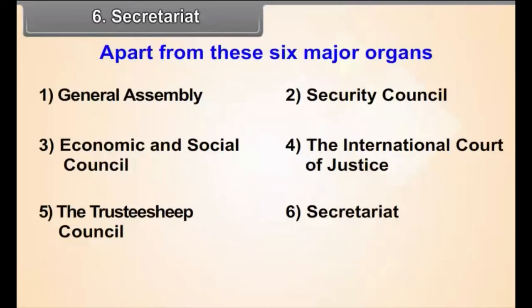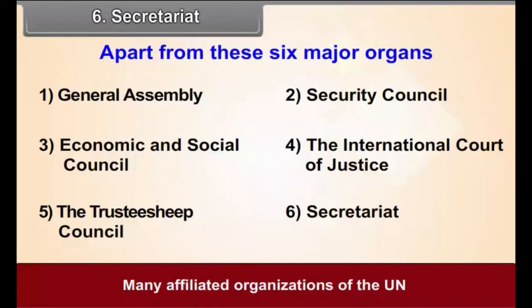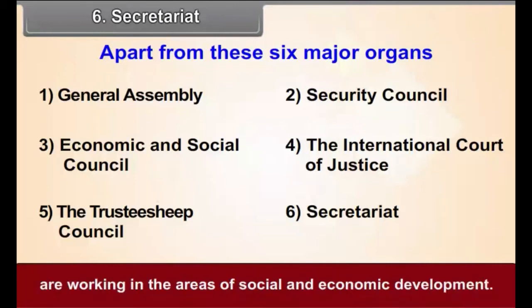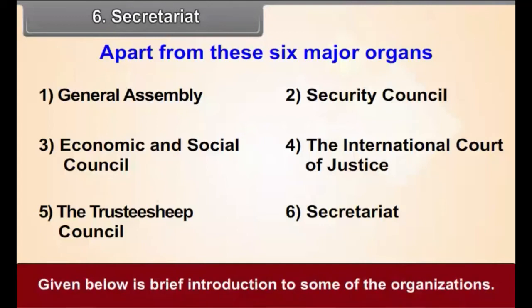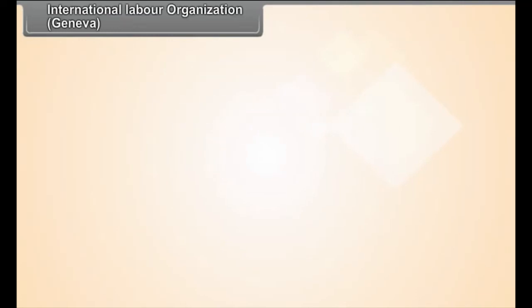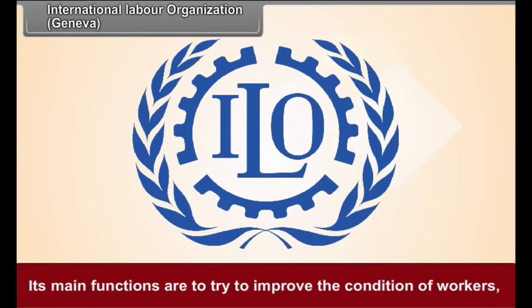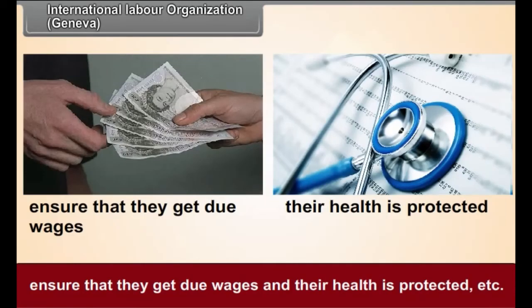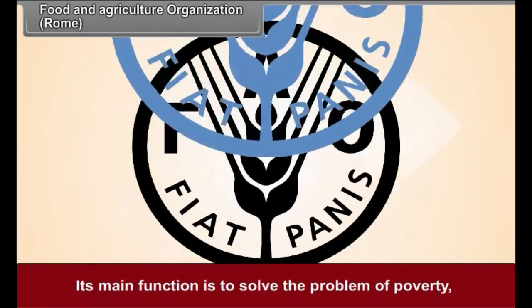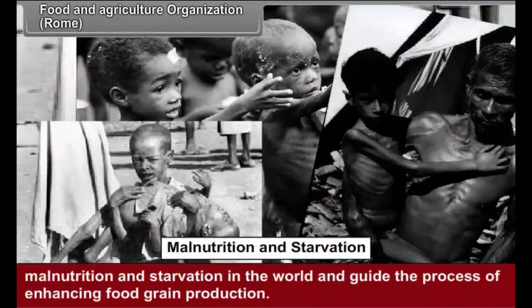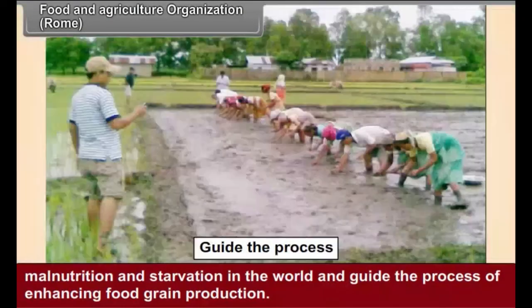Apart from these six major organs, many affiliated organizations of the UN are working in the areas of social and economic development. The International Labour Organization, based in Geneva, works to improve the condition of workers, ensure they get due wages, and that their health is protected. The Food and Agricultural Organization, based in Rome, works to solve the problem of poverty, malnutrition, and starvation in the world and to guide the process of enhancing food grain production.